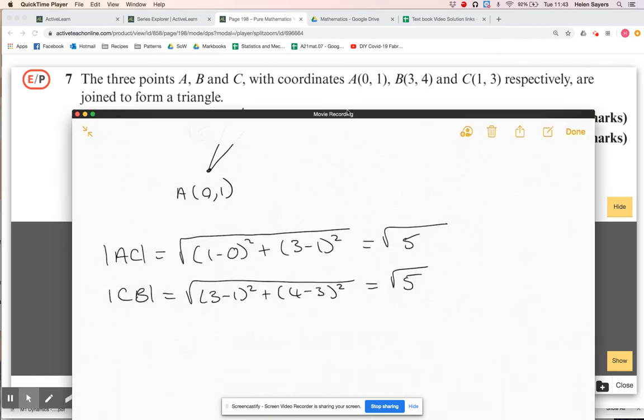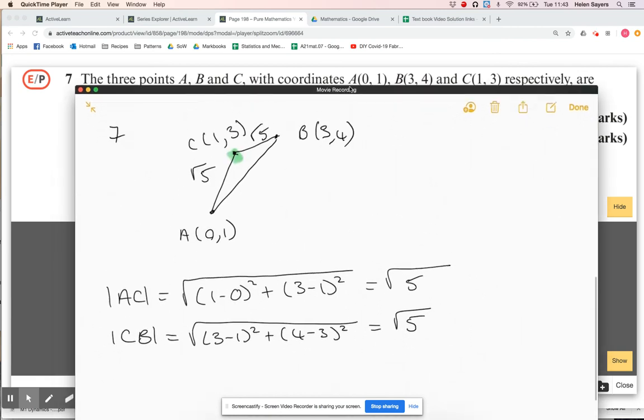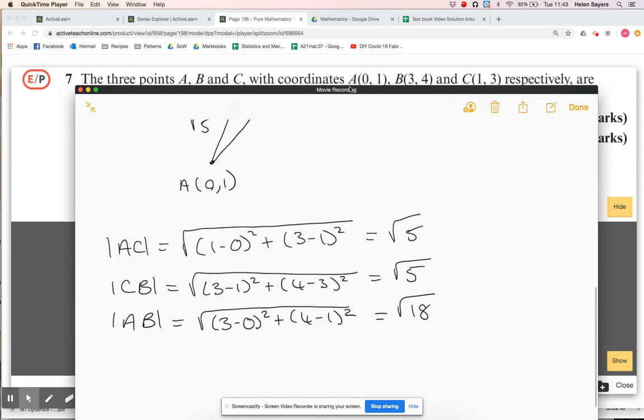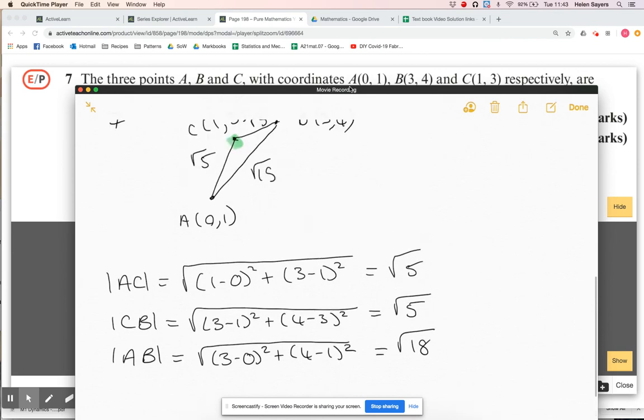And then let's do the length of AB, so that is going to be the square root of three minus zero all squared, plus four minus one all squared, so that is going to be nine plus nine. I'm not going to bother simplifying any of that third down, because there's not really any need to. So that's root 18.